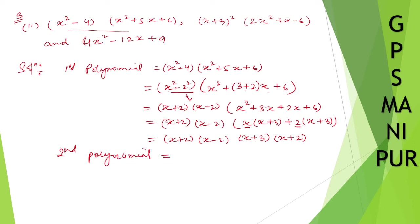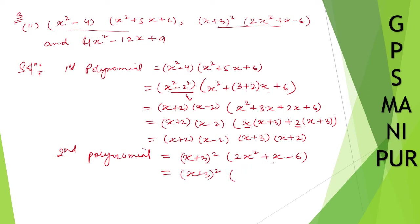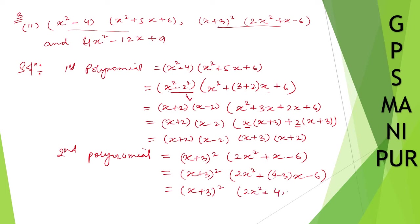Now take the second polynomial: (x+3) whole square times 2x squared plus x minus 6. For 2x squared plus x minus 6, the product is 2 times 6 equals 12, and I split the middle term as 4 minus 3 equals 1. So I write 2x squared plus 4x minus 3x minus 6. Take 2x common from the first two and 3 common from the last two.